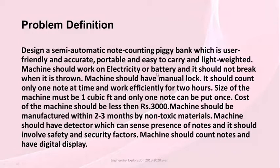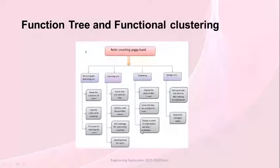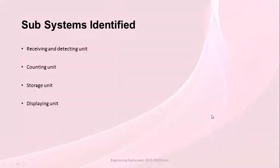Next, let us see about the function tree. Here in the function tree we have mainly divided into four sub-parts: receiving and detecting unit, counting unit, displaying unit, and storage unit. You can see each part is further divided into sub-parts. These are the four subsystems we have identified.